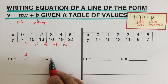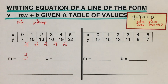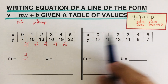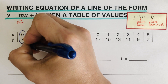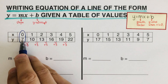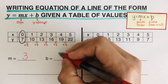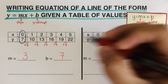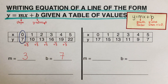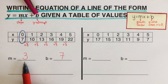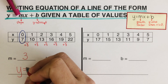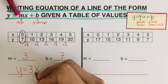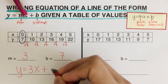Now b is the y-value when x is 0. We look for the x-value that is 0 and find the corresponding y. That's the point (0, 7), so b is 7. We plug these into the equation: y equals 3x plus 7.